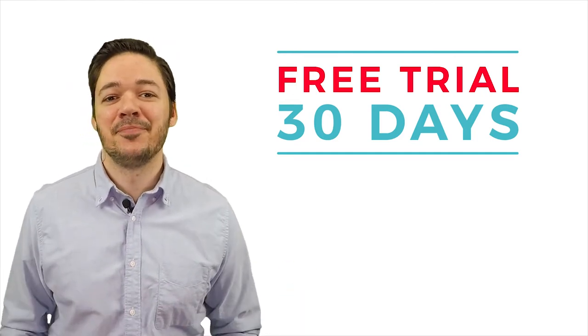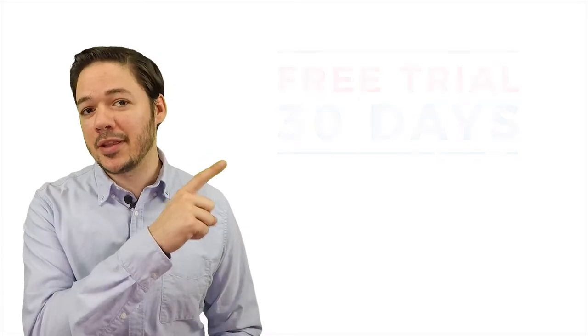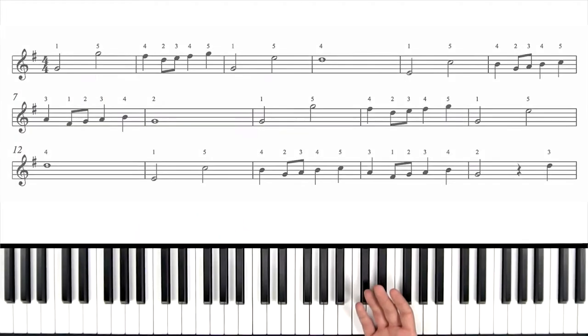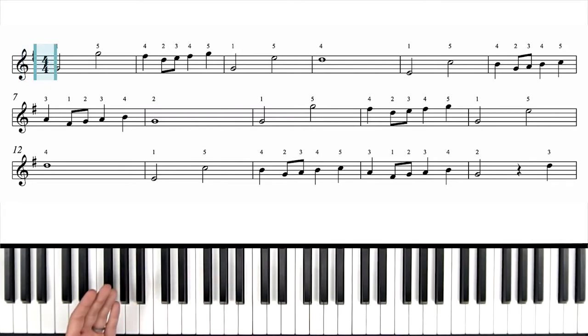Pretty great, right? Check out the app, check out the free trial by clicking the link in this video's description, or by tapping that card above. For now, let's get started on this video. I want to break down the right hand first. The key signature here is 1 sharp, F sharp. That tells us we're in the key of G. Time signature is 4-4, 4 beats per measure.